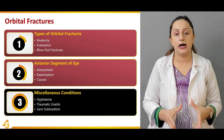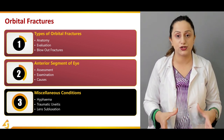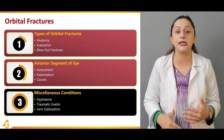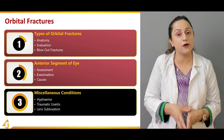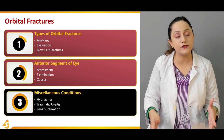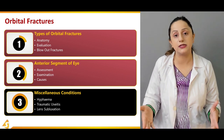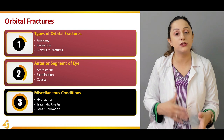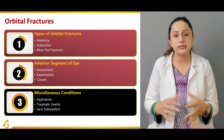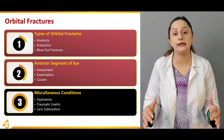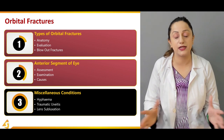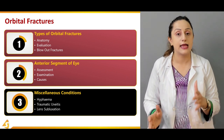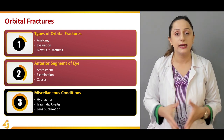Hyphema is a very common condition observed in patients with orbital fractures. It is a collection of blood in the anterior chamber of the eye. It is important to differentiate hyphema from hypopion: hyphema is a blood-tinged fluid collection, whereas hypopion involves a whitish or infectious fluid or pus in the anterior chamber. In severe cases, the whole chamber can be involved in either condition.